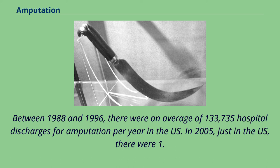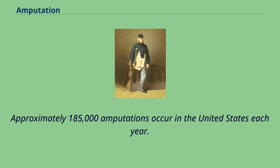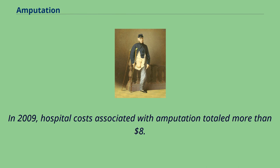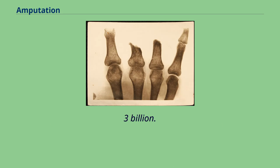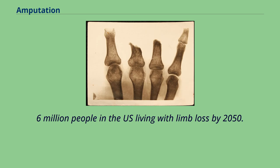In 2005, just in the US, there were 1.6 million amputations. In 2013, the US had 2.1 million amputations. Approximately 185,000 amputations occur in the United States each year. In 2009, hospital costs associated with amputation totaled more than $8.3 billion. There will be an estimated 3.6 million people in the US living with limb loss by 2050.